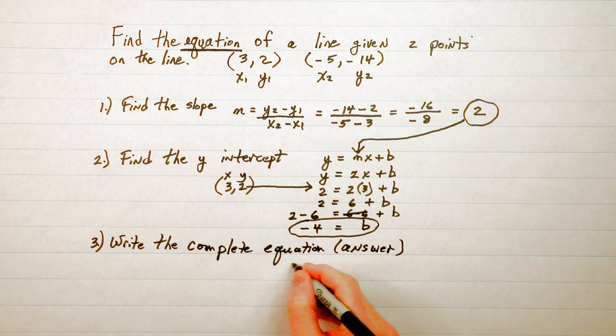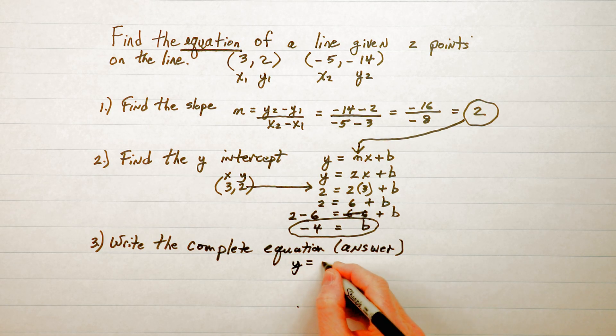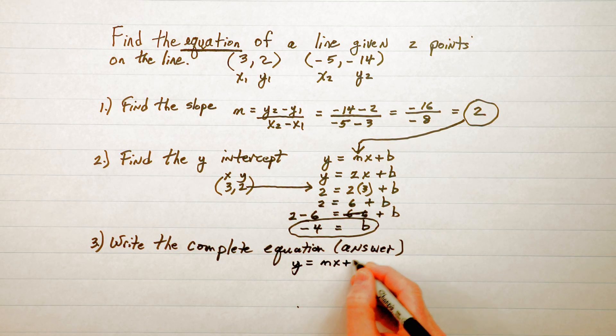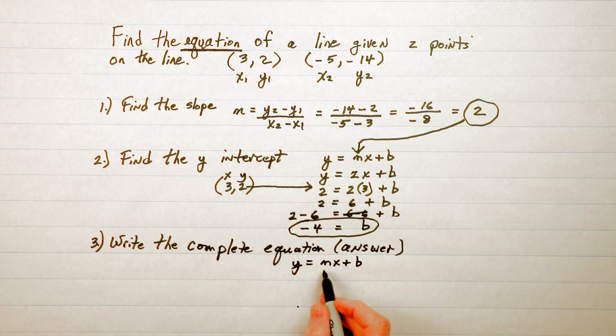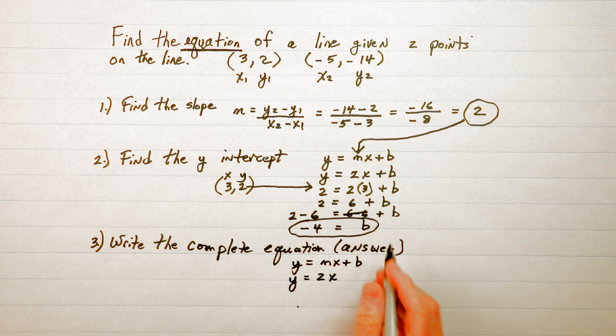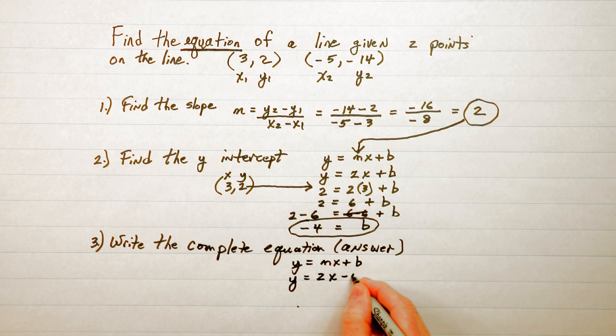So write the complete equation. I'm going to start off with y equals mx plus b and in place of m we put 2 right here. So y equals 2x and b is -4 so we replace b with -4.